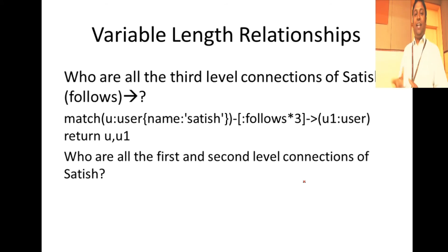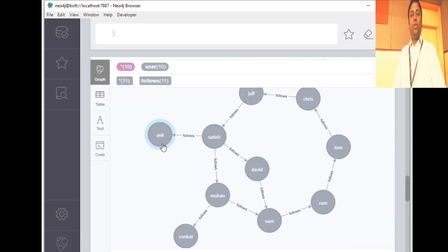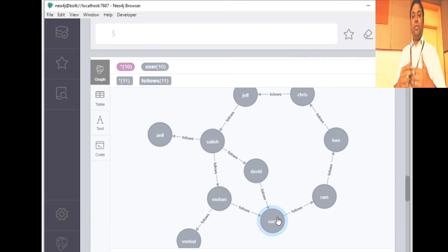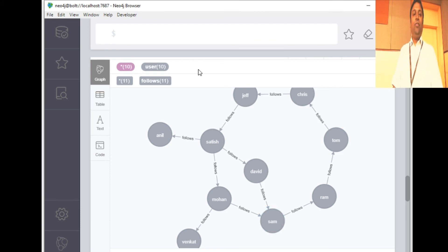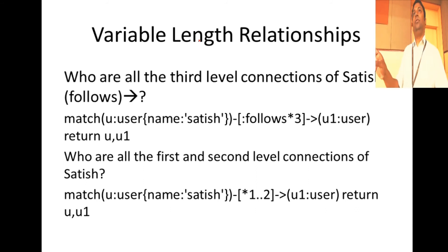Next query: find all first level AND second level connections of Satish. In the graph, Venkat is only a second level connection whereas Anil is only one level — Satish follows Anil directly. Sam is at the second level. We need to bring both Anil, Sam, Mohan, and David — those one hop and two hops away from Satish. You specify minimum and maximum hops: star one dot dot two — minimum one hop, maximum two hops.